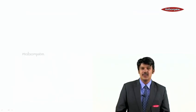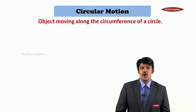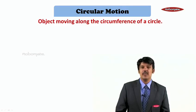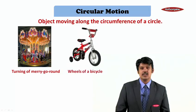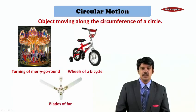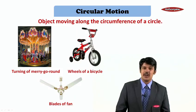The fifth type of motion is circular motion. An object moving along the circumference of a circle — that is, moving round and round — is in circular motion. The best examples are the turning of a merry-go-round, the wheels of a bicycle, and the blades of a fan. All of them perform circular motion.